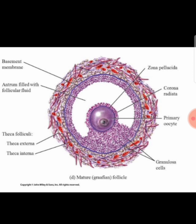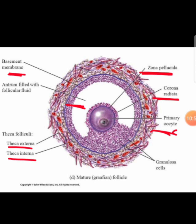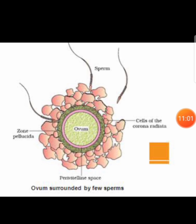In the structure of the Graafian follicle, remember that it has layers called tunica externa and tunica interna, an antrum filled with follicular fluid, and a basement membrane. Around the primary oocyte you can find zona pellucida and corona radiata, and granulosa cells at the base of the primary oocyte.